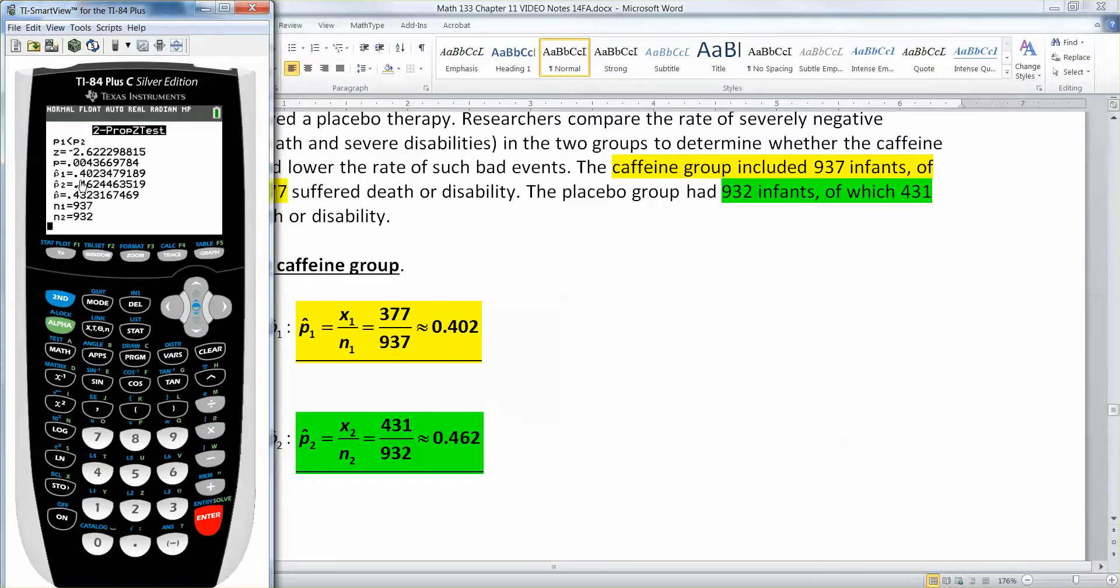If you'll notice, it actually finds P1 hat 0.402 and P2 hat 0.462. This calculator stuff is so handy. And then right there is the Z score, negative 2.63223. And while I'm on the subject, look at the plain P. That plain P is your P value, 0.0044.